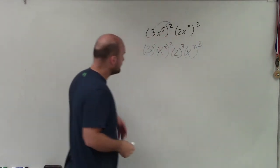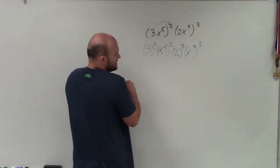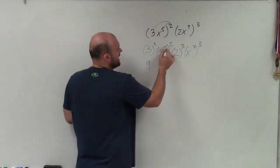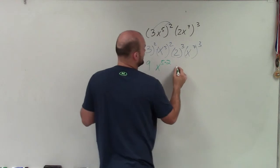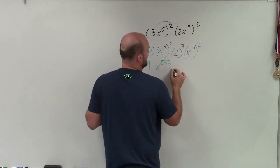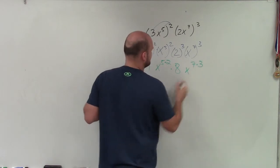Now I can use the power rule. I can simplify 3 squared as 9. X to the fifth raised to the second would be 5 times 2. 2 cubed would be 8. And then this would be x to the 7 times 3.